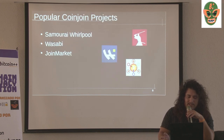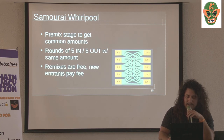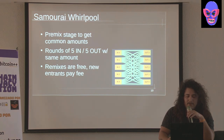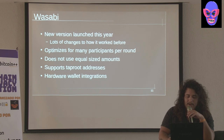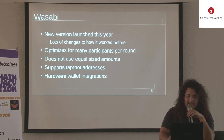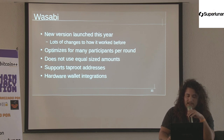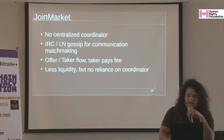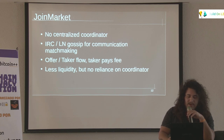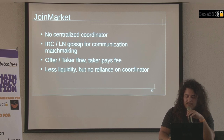Some of the more popular CoinJoin implementations: Samourai Whirlpool, Wasabi, JoinMarket, things like that. Samourai has a five-input, five-output model. Wasabi optimizes for many amounts. Hardware wallet integration is huge — you don't have to go into a hot wallet for mixing. JoinMarket has no centralized coordinator; it's more decentralized, using IRC and Lightning Gossip for communication and matchmaking. There's less liquidity generally, but no reliance on a single coordinator.